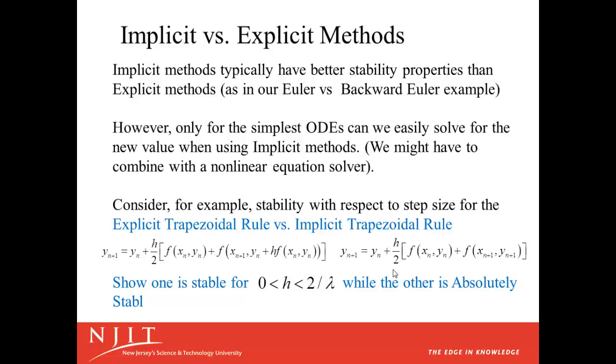You might want to consider for yourself analyzing another problem, the stability with respect to step size for the explicit trapezoidal rule, which is one of the two-step Runge-Kutta methods. The new value is the old value plus h over 2 times the slope at the left, plus the slope that you get using an Euler step to get an approximation for what's on the right, versus the implicit version of that where the new value is the old value plus h over 2 times the slope at the left, plus the slope at the right. Show that one of these methods is stable for zero less than h less than 2 over lambda, while the other one is absolutely stable.